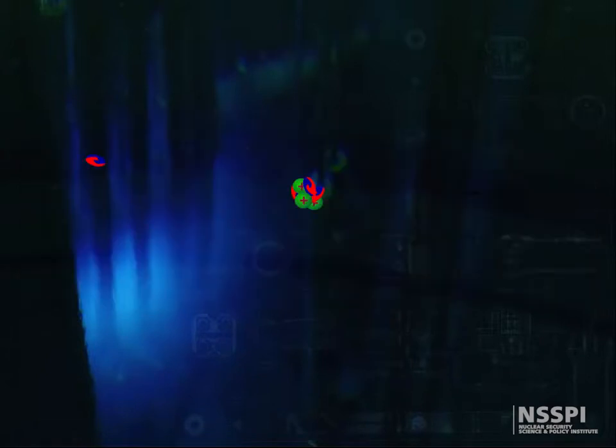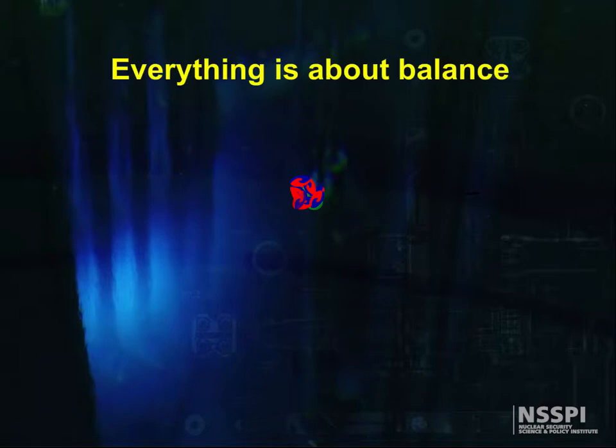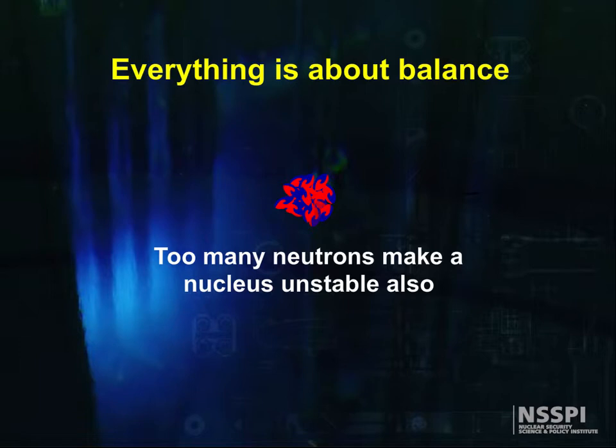All you need to do to make stable nuclei is just to add lots of neutrons, right? They add nuclear strong force, but do not add coulombic repulsion. Well, for better or worse, it's not that simple. It's a kind of zen thing. It's all about balance. Just as with the decay of tritium, too many neutrons make a nucleus unstable also.